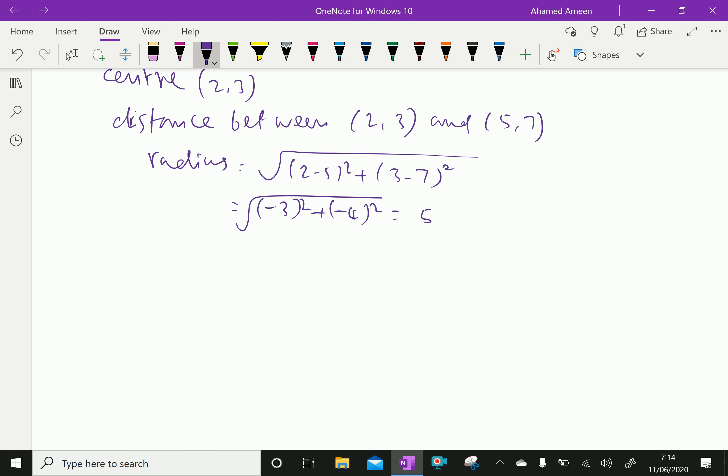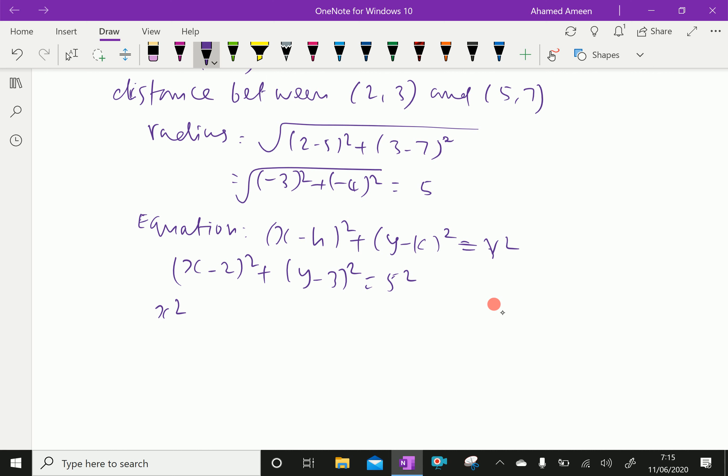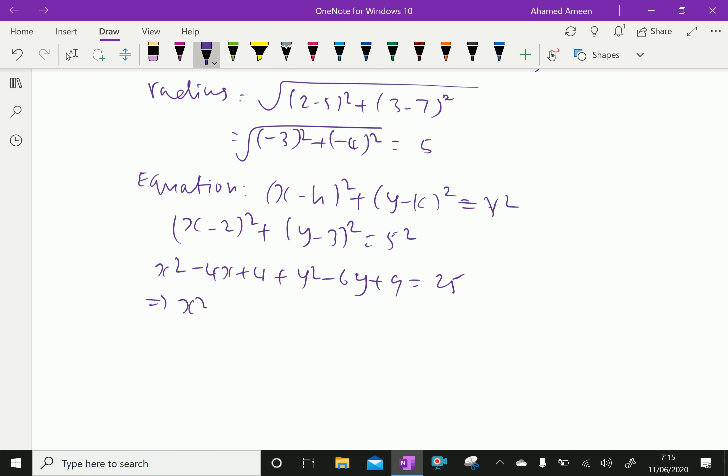Now, equation of the circle. We know that (x minus h) squared plus (y minus k) squared equal r squared. So, the center is (2,3), that is (x minus 2) squared plus (y minus 3) squared equal the radius squared, which is 5 squared. Now, expanding: x squared minus 4x plus 4 plus y squared minus 6y plus 9 equal 25. So, we will write x squared plus y squared minus 4x minus 6y. Here, 25 comes this side, so 9 minus 25 is minus 12. This is the required equation.